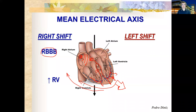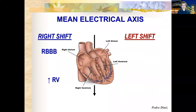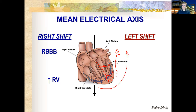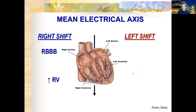Because the right side will be the last to receive depolarization, the mean electrical axis shifts toward that side. Conversely, on the left side, we have the anterior fascicle and the posterior fascicle. If one of them is blocked, depolarization travels cell by cell up through the wall of the left ventricle, making that the last region depolarized, so the mean electrical axis shifts in that direction.